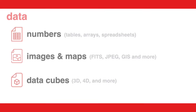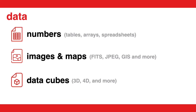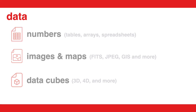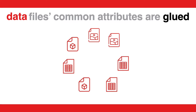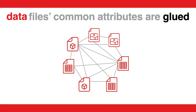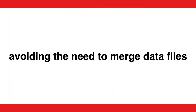What do we mean by data? Any files that contain numbers, images, maps, high dimensional data cubes — all kinds of formats. Glue glues together the common attributes of any kinds of data sets, building a network that exposes or encapsulates the shared properties of all of these data files, which completely avoids the need to merge your data files before analysis.